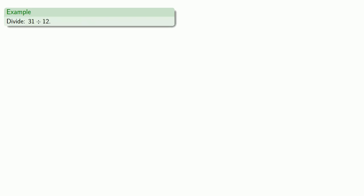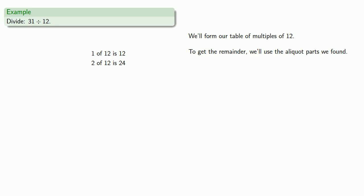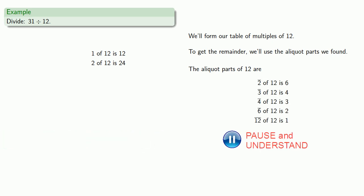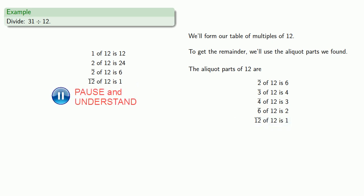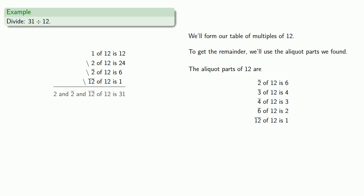So let's say I want to divide thirty-one by twelve. We'll form our table of multiples of twelve: one twelve is twelve, two is twenty-four — four would be too much. I don't have enough yet, so to get the remainder, we'll use the aliquot parts of twelve: half, a third, a fourth, a sixth, and a twelfth. I need thirty-one, so I need the two-twelves giving twenty-four, and I need seven more — I can pick up seven more by taking the half, which gives six, and then the twelfth, which gives one. So my quotient is two and a half and a twelfth.